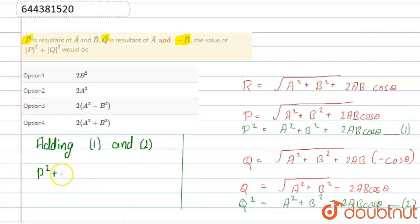P square plus Q square is equal to A square plus B square plus two AB cos theta plus A square plus B square minus two AB cos theta.